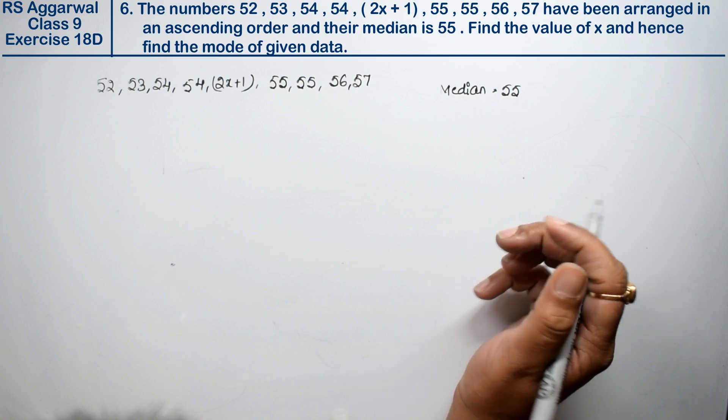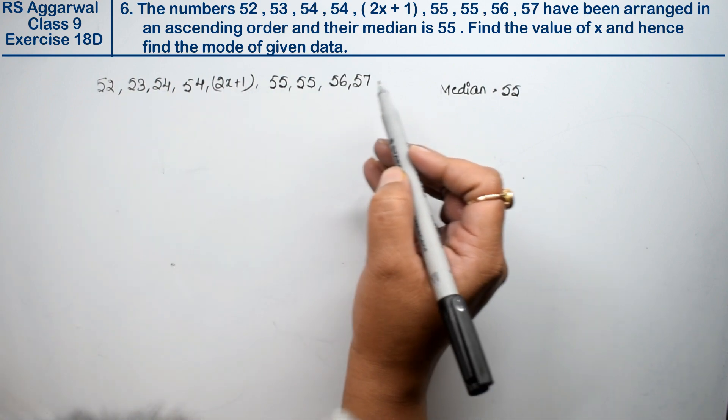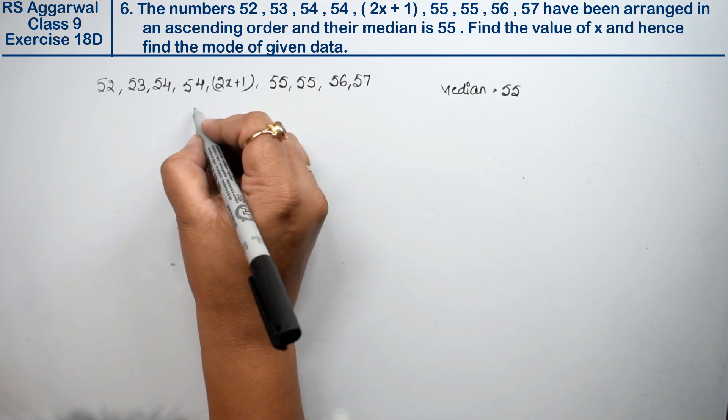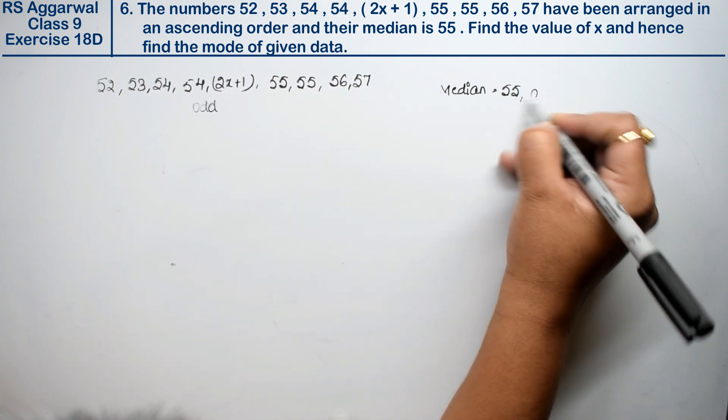Let's see how many observations we have: 1, 2, 3, 4, 5, 6, 7, 8, 9. So 9 is odd, n equals 9 is odd.